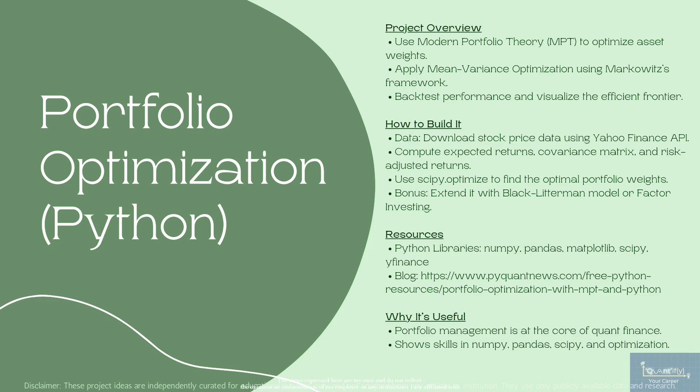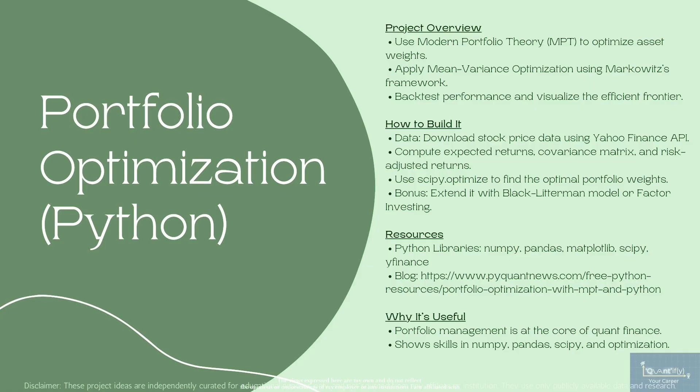Using libraries like NumPy, Pandas, and Matplotlib, you can perform the optimization and visualize the efficient frontier, which shows the best possible portfolio combinations. If you want to take it a step further, you can incorporate models like Black-Litterman for more accurate estimates or even explore factor investing. This project will not only showcase your knowledge of financial concepts, but also your ability to work with Python for data analysis and optimization.